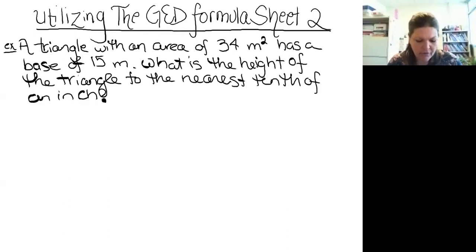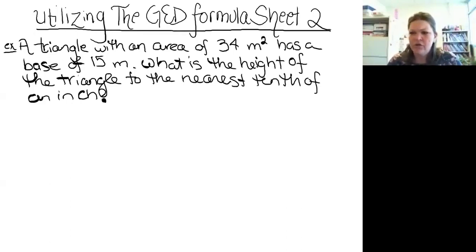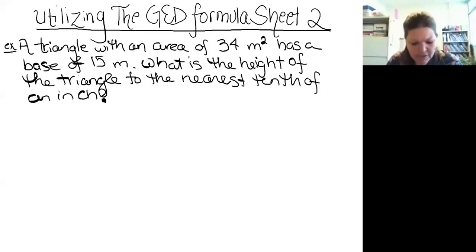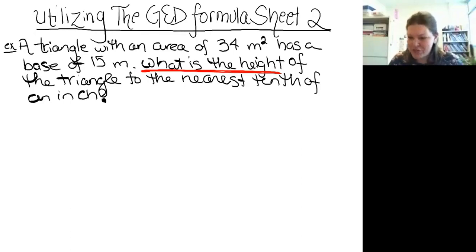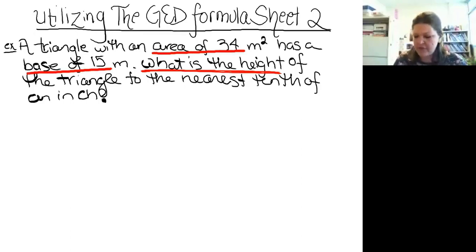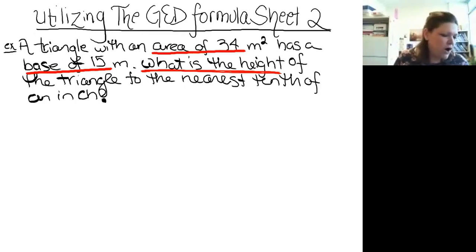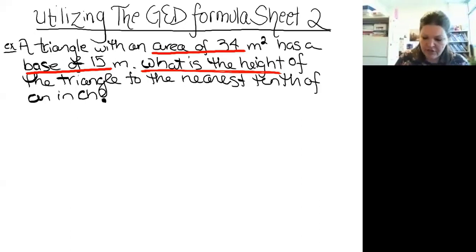Whenever you're faced with a new word problem, I always suggest you look at where you're going and where you're starting from. The question is asking us to find the height. We've been given some starting information: the area and the base of this triangle. Anytime I see area, perimeter, volume, or surface area, I know those geometry concepts are on my GED formula sheet.